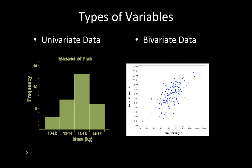And just a heads up — this graph right here to the right would not be graded very well on the AP test because it does not have a title. Every graph must include a title, axis titles, and units. Just saying.